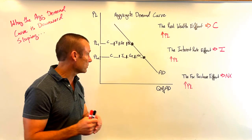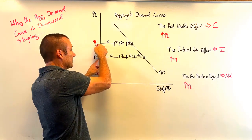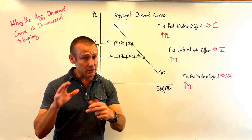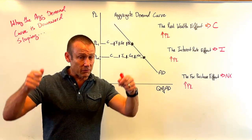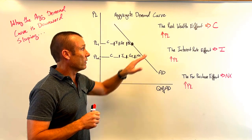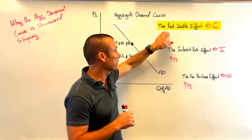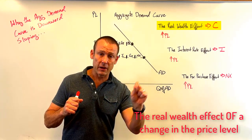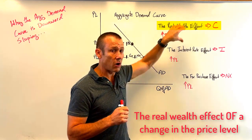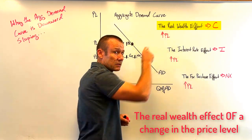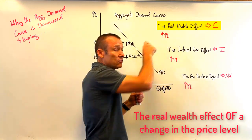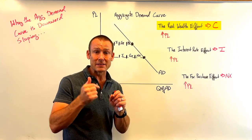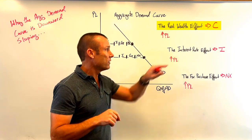Here we go — the reasons. When the price level goes up, consumption — household spending — is going to decrease. It's not because we're substituting away to cheaper products, because it's the price level going up generally. What is happening is the real wealth effect, whose full name is the real wealth effect of a change in the price level. This effect is about how a change in the price level has an effect on real wealth.